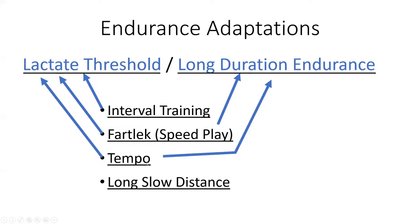Tempo training can build both lactate threshold and long duration endurance. Tempo training is really working for a sustained effort as close to lactate threshold as you can — working near maximal aerobically for extended periods of time, such as 15, 20, 25, or 30 minutes. You can turn those into tempo intervals: five minutes on, two minutes rest, five minutes again. This is more half marathon and marathon runner type training. If you want to develop lactate threshold, you have to train just below it — you can't train above it, and you can't train too far below it, or it will not stimulate your body to change because it is not specific to the imposed demand.